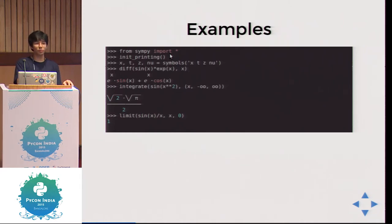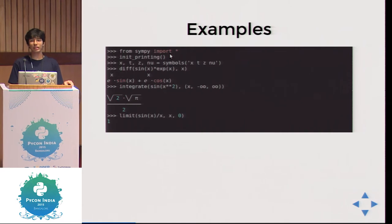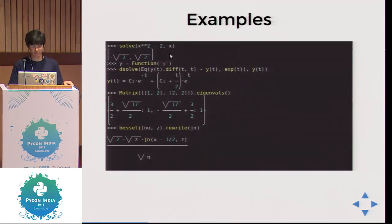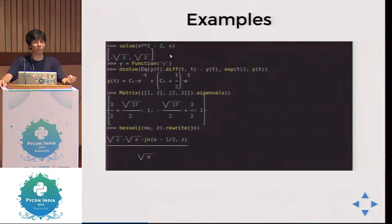If you use integrate and do not pass limits, you get the integral in symbolic form. If you want to evaluate it, you give the limits. This is the exact value of the integral, so doing it symbolically is more accurate and better. You can also calculate limits. SymPy also has a solve function — you can take an equation, pass it to solve along with the variable you want to solve for, and it returns the values. There is also a new module called solveset: for sin(x) = 0, the old solve returns only x = 0, but solveset returns all possible infinite values.